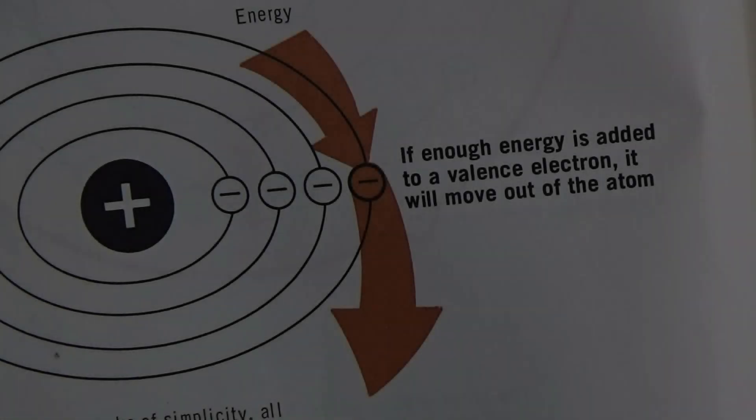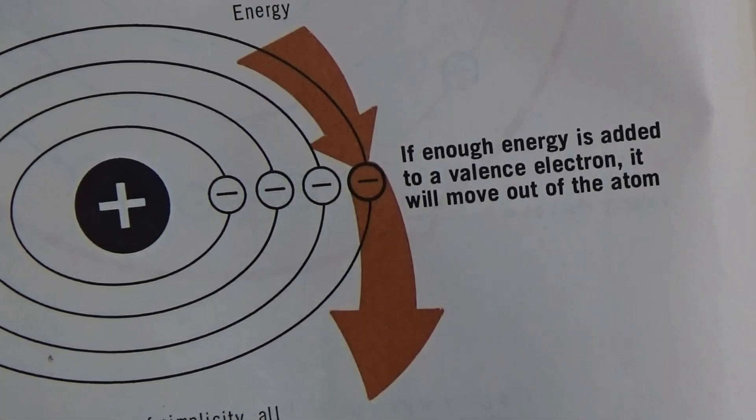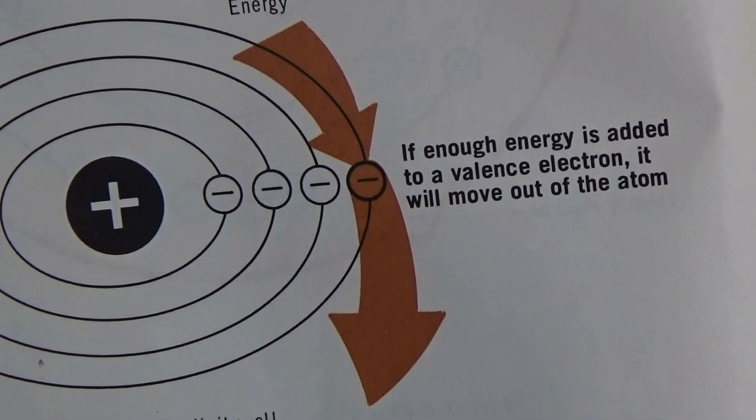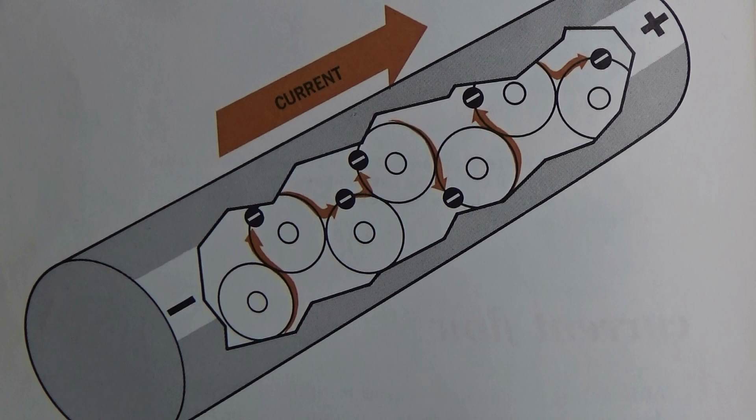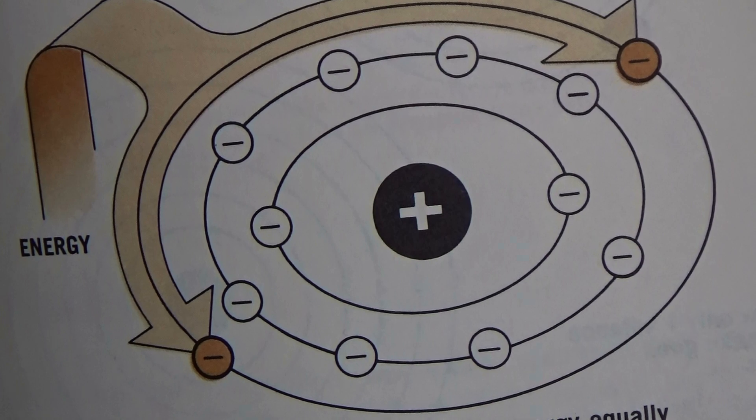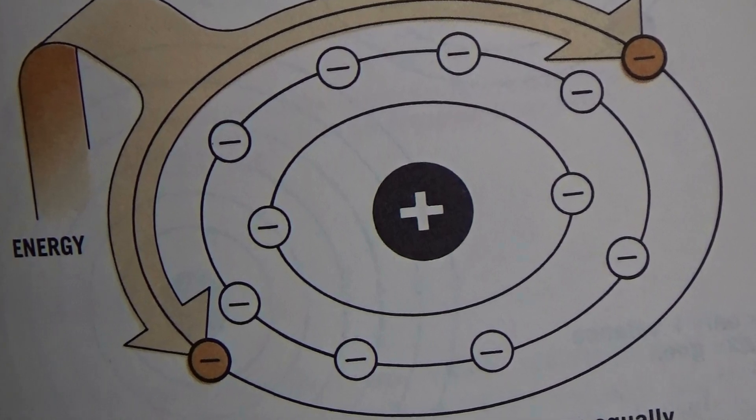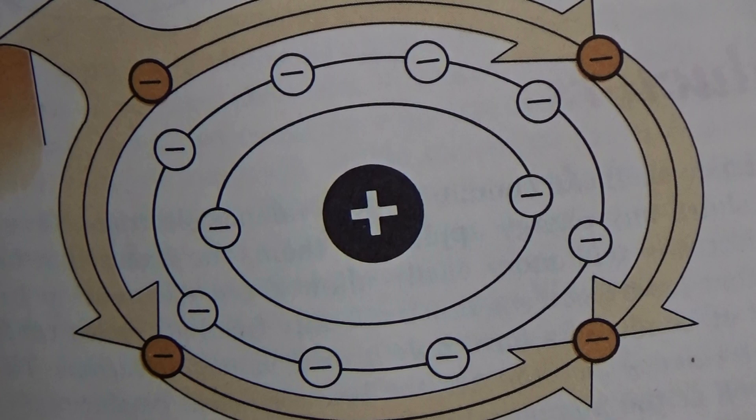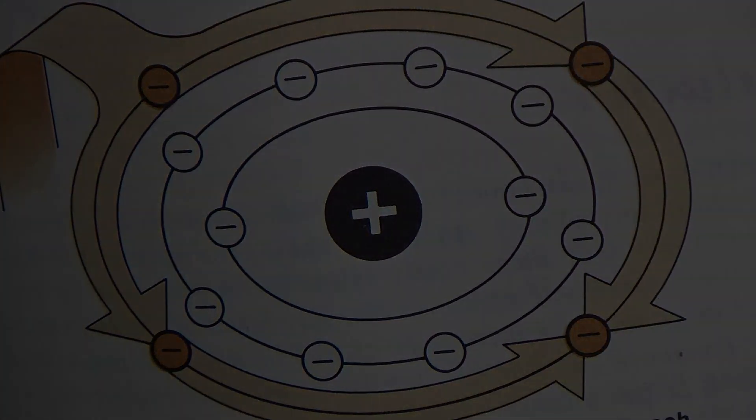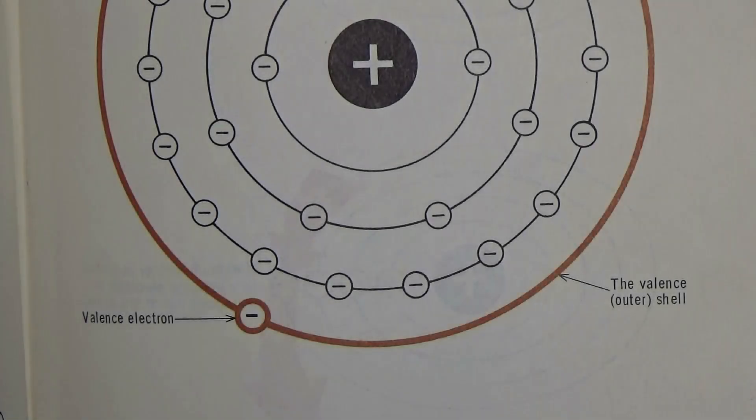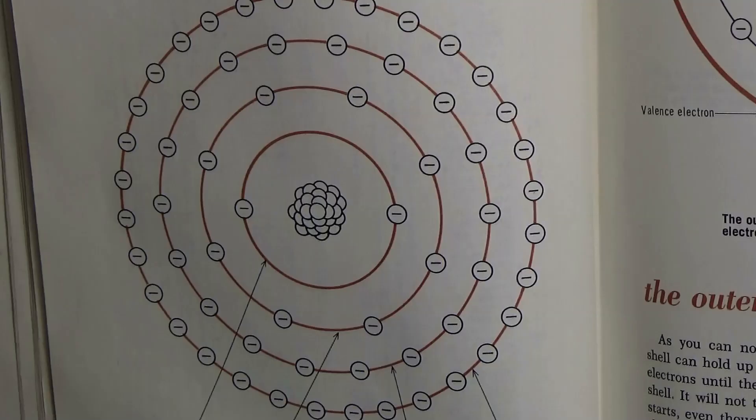If enough energy is applied to a valence electron, it will move out of its orbital shell and be freed from its atom. This is where electricity comes from, the exchange of energy between electrons moving in and out of atoms. Energy that is applied to an atom's orbital shell will be distributed evenly to each electron within that shell. If there are more electrons than a valence shell, each electron will get less energy from a given source. It is this property that determines what materials conduct electricity well and are considered conductors, and what materials do not conduct electricity well and are considered insulators.